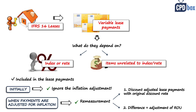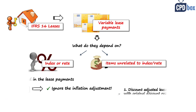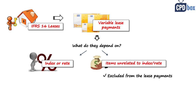What about lease payments depending on future sales? Under IFRS 16, payments not depending on a rate or index do not enter into your lease payments — they are excluded. This means they are recognized in profit or loss when incurred. The reason for this simplification is that estimating future sales and other such items would represent a very high level of uncertainty, making the information of little use.